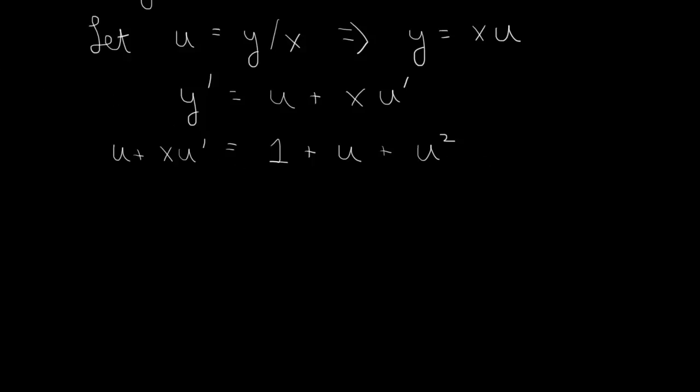Now, we can cancel u, this one, and this one. And we end up with x. And let me write u prime in fractional form, du dx equals 1 plus u squared.